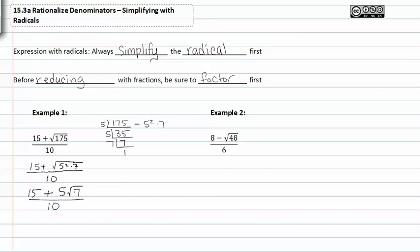Now that we've simplified the radical we can look at the terms in the numerator and determine what the common factor is so we can reduce our fraction. Remember we always factor the terms in the numerator before we can reduce our fraction.